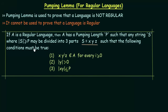Now we will see what the Pumping Lemma states and how it can be used to prove that a language is not regular. The statement of the Pumping Lemma says: if A is a regular language, then A has a pumping length P such that any string S where the length of S is greater than or equal to P may be divided into three parts S = XYZ such that the following conditions must be true.